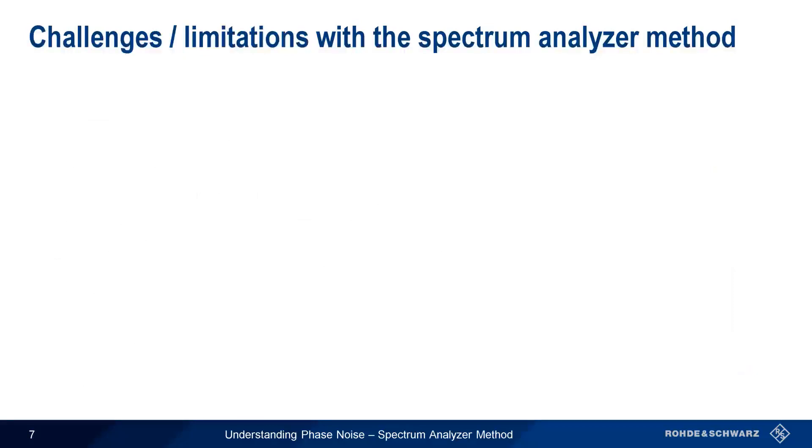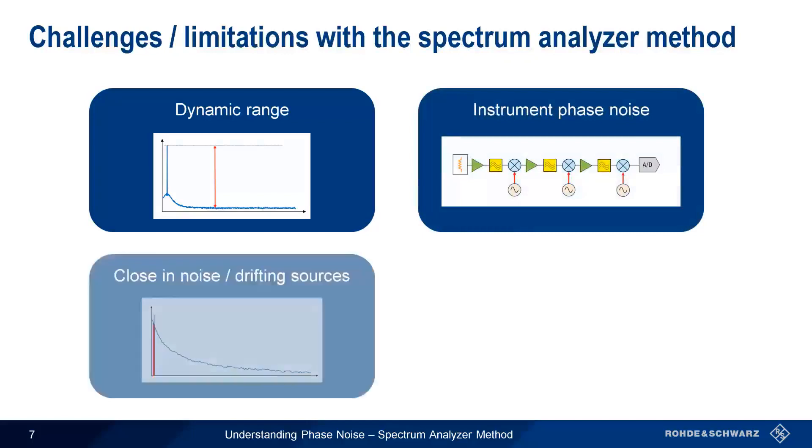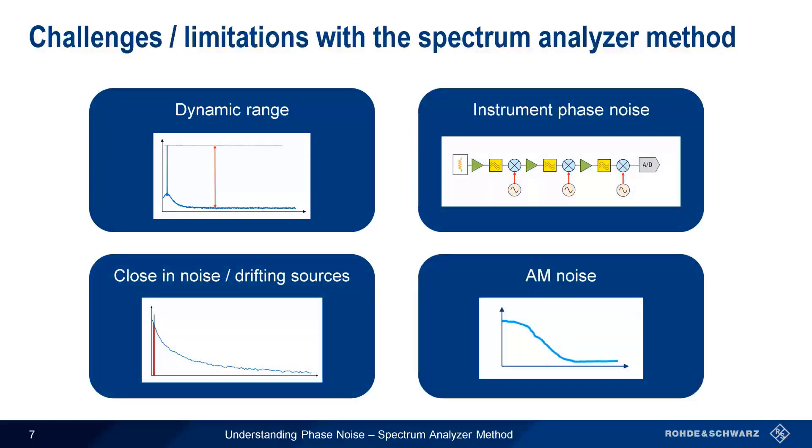In many cases, a traditional spectrum analyzer is sufficient for making phase noise measurements, but it's important to be aware of some of the challenges or limitations when using the spectrum analyzer method. These are dynamic range, instrument phase noise, close-in noise or drifting sources, and AM or amplitude noise. Let's spend a few moments looking at each of these.